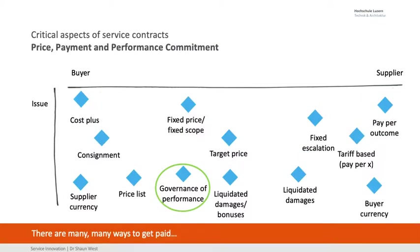Price, payment and performance commitments — very important. Pay per outcome or cost plus consignment — many different ways. How do we understand if we perform well? Do we get bonuses or is it capped? I would always recommend a bonus, but I'd also take liquidated damages. We're trying to share risk — pains and gains on the critical outcomes important for the customer. How do we escalate? If it's a 20-year contract, you better have an escalation clause in there and make sure it's the right one.